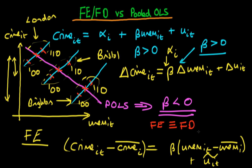Hence, just like in the first differences case, we conclude that beta is greater than zero — unemployment rate increases tend to increase the crime rate. In both fixed effects and first differences, we have removed the unobserved heterogeneity term alpha_i, and by doing so we obtain parameter estimates that are much better than those from pooled OLS alone.